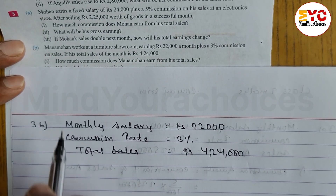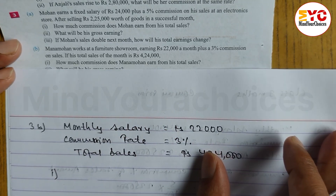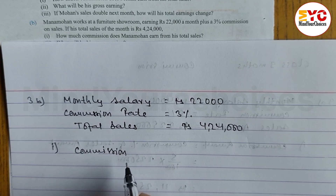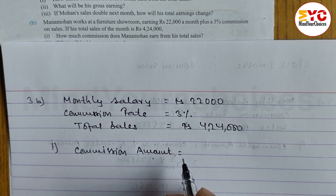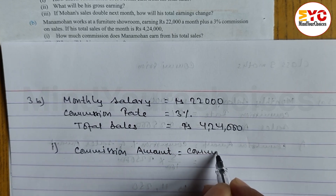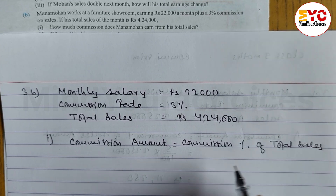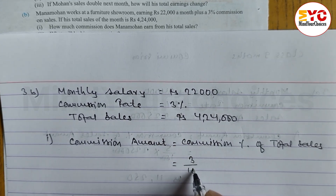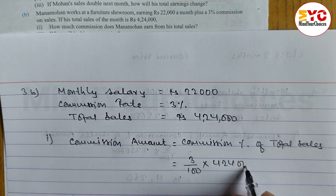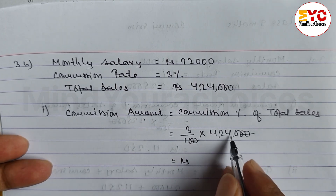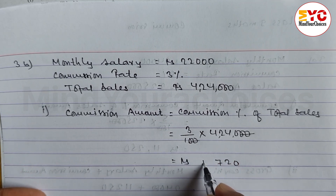Number 1: how much commission does Manamohan earn from his total sales? Commission amount — let's find out. Commission amount formula is commission percent of total sales. Commission percent is 3%, so: 3 divided by 100 into 4,24,000. When you calculate, we get 12,720.